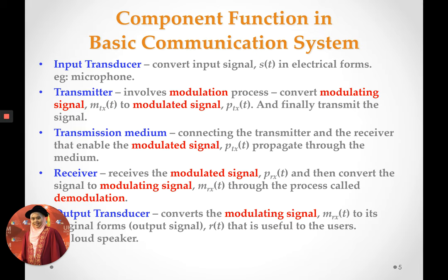These are the component functions inside a communication system. I want to highlight key terminology that will be used in later chapters, especially chapters four, five, seven, and eight. Modulation is the name of the process. The modulating signal is the signal containing the information we want to deliver. The modulated signal is the signal that has gone through modulation. Demodulation is the process that does the opposite of modulation.